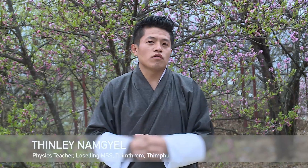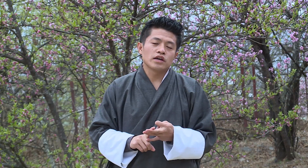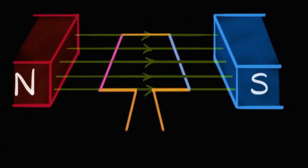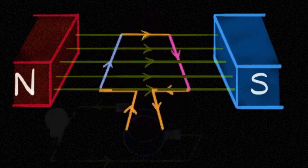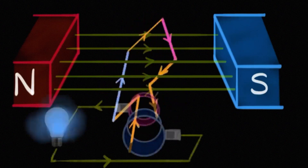Similar to a DC motor, an AC generator consists of four main parts: armature coil, magnet, slip rings, and brushes. I want to draw your attention to the armature coil placed between two magnets of opposite poles. Imagine that the armature coil is attached to a turbine so that when the turbine rotates, the armature coil rotates with it. When the armature coil rotates, the magnetic field changes due to the disturbance of rotation, and that results in the production of electric current.